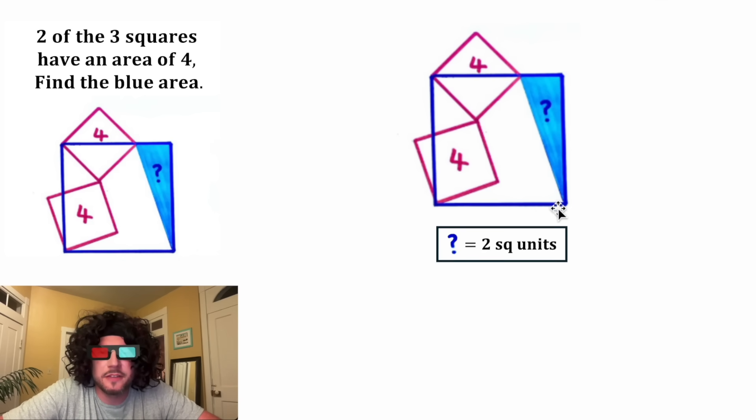In the given diagram, the area of this blue right triangle is equal to two square units. It's exactly half of either of these squares. How exciting.